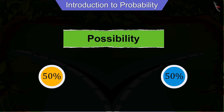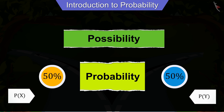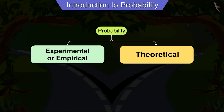When we talk about possibility, we are talking about probability, which we represent by P. Here we have no previous data to choose the right path, due to which the experimental probability cannot be used here.